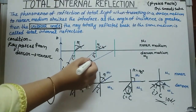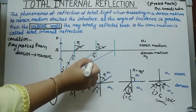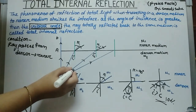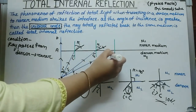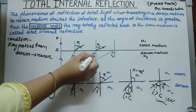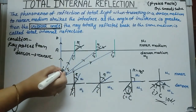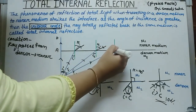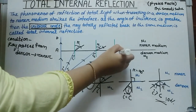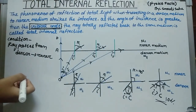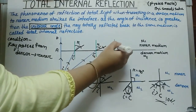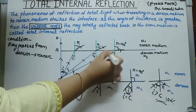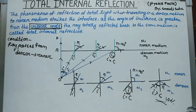Take another incident ray with angle I3, where I3 is greater than I2 and I1. As we gradually increase the angle of incidence, the ray is refracted but goes parallel to the interface. At this condition, R equals 90 degrees — that angle of incidence I3 is known as the critical angle.